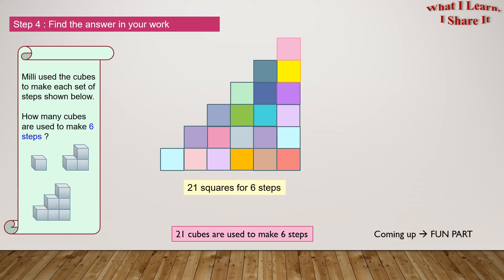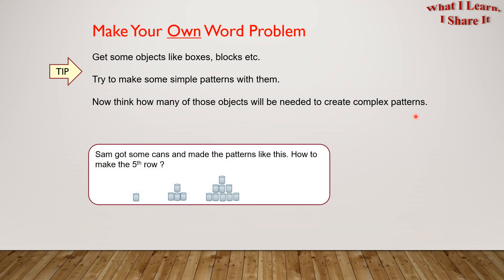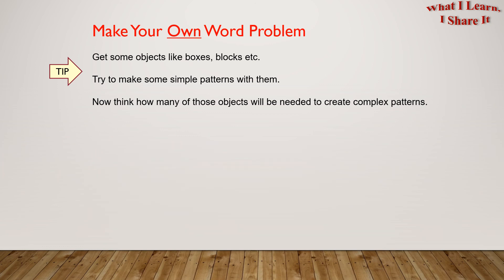Coming up is the fun part, and that is: make your own word problem! Here's a tip — get some objects like boxes, blocks, etc. Try to make some simple patterns with them, then think about how many of those objects will be needed to create more complex patterns. Here's an example: Sam got some cans and made patterns like this. How many cans are needed to make the fifth row? So exciting to make our own word problems!